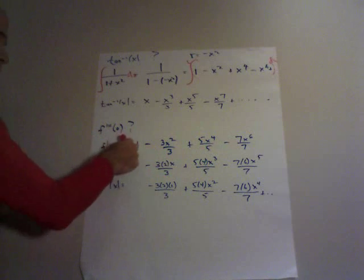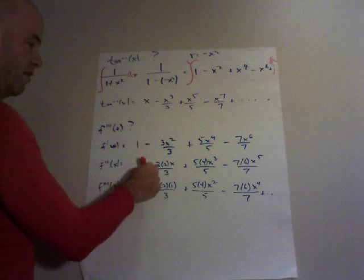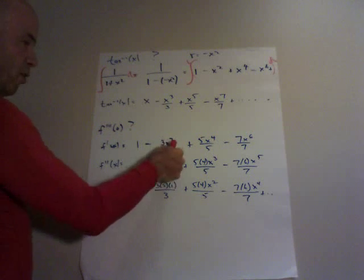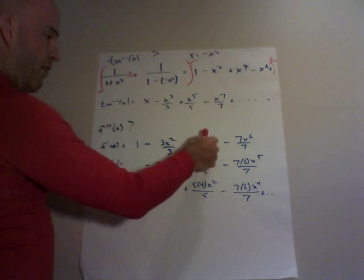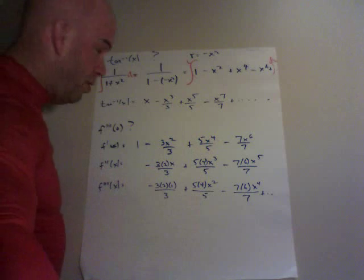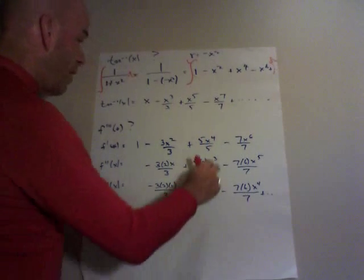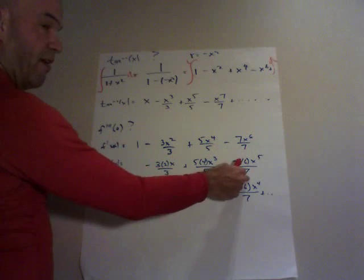Second derivative. This term goes to 0. Then I'm left with negative 3 times 2x to the 1 over 3 plus 5 times 4x cubed over 5 minus 7 times 6x to the fifth over 7.